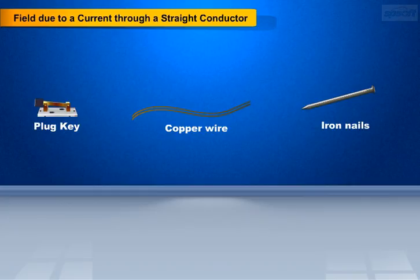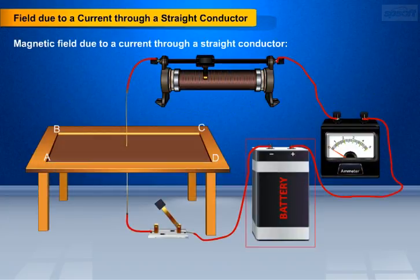Procedure to be followed is: take a 12 volt battery, a variable resistance or rheostat, an ammeter of 0 to 5 ampere, a plug key, and a long straight thick copper wire.